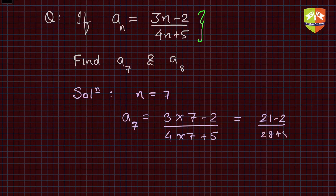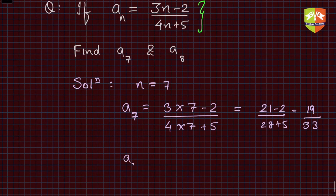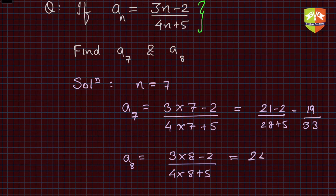What is this now? Simple arithmetic: 21 minus 2 divided by 28 plus 5, and if you see, this is nothing but 19 upon 33. This is the a7 part. What is a8? a8 will be simple—deploy n equals 8, so 3 times 8 minus 2 divided by 4 times 8 plus 5.